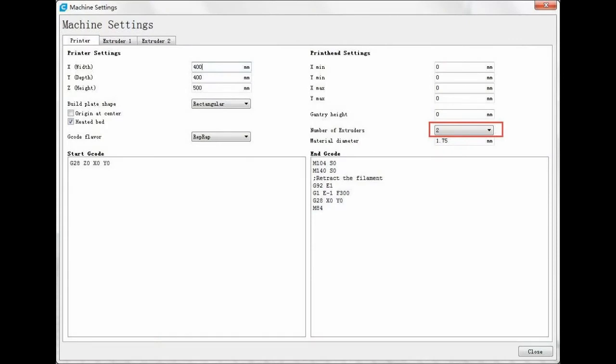Let's take here for example. Open machine settings. Select 2 for number of extruders. Put 1.75 for material diameter.